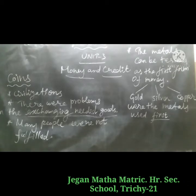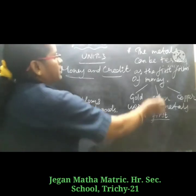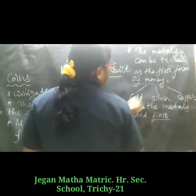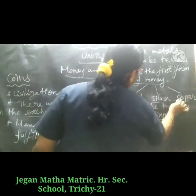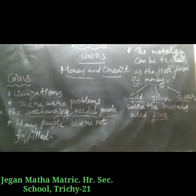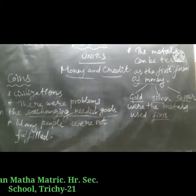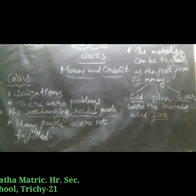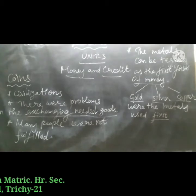Gold, silver, and copper were the metals used first. Metal can be termed as the first form of money. Coins were majorly made using metals — gold, silver, and copper. These first metals used were called ancient currency. Leather, beads, shells, tobacco, salt, corn, and even slaves were exchanged as barter, say economists.